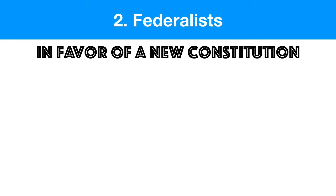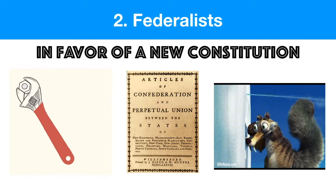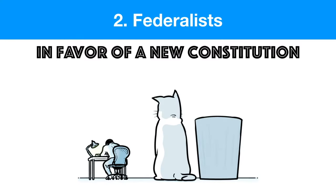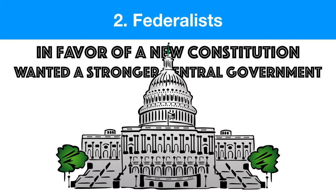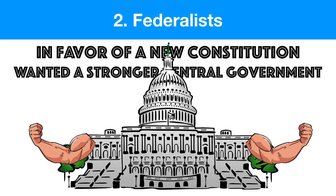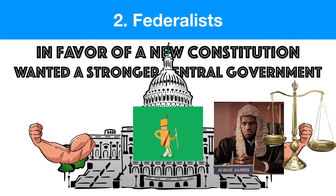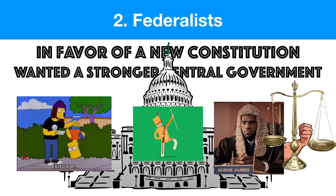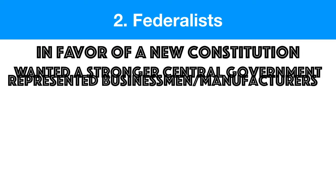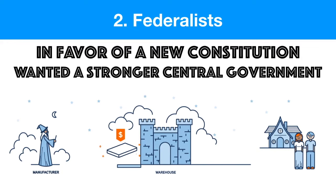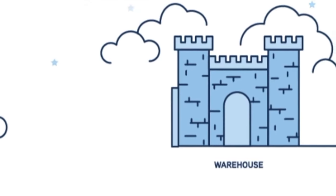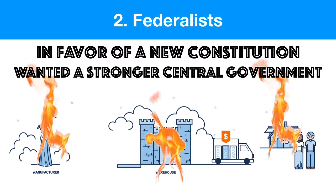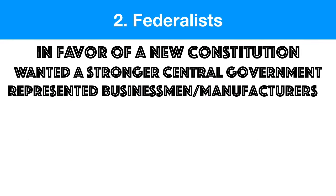The first group, the Federalists, called for a new Constitution. They realized that as they tried to fix the Articles of Confederation, more holes kept popping up. So it would probably be best to start fresh. Most importantly, they wanted a stronger central government — they needed to boost its power to put down things like Shays' Rebellion. They needed a leader, a Supreme Court to interpret the laws, and a legislative branch that could actually collect taxes. The Federalist delegates represented businessmen and manufacturers who understood that business can't succeed if there's rebellion everywhere.